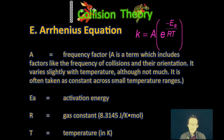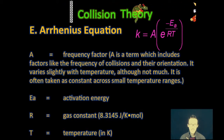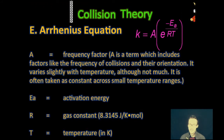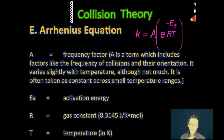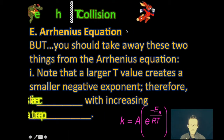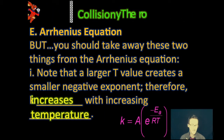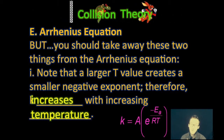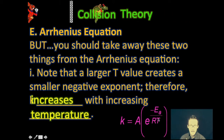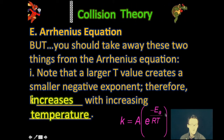The Ea value is your activation energy. R is your gas constant — be careful here, use the energy R value, which is 8.314. Temperature is in Kelvins on the absolute temperature scale. Two important takeaways: one, a larger T value creates a smaller negative exponent, therefore K will increase with increasing temperature. Your rate constant K gets bigger and reactions can happen more quickly the hotter it is.